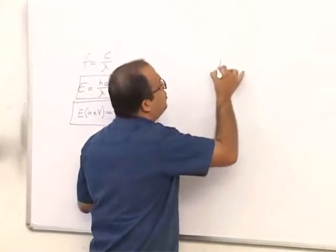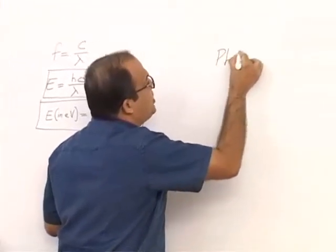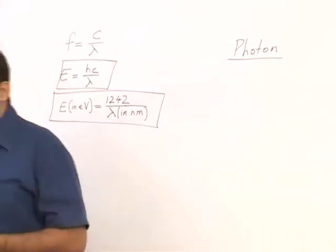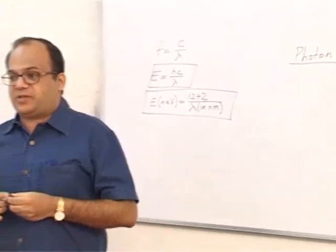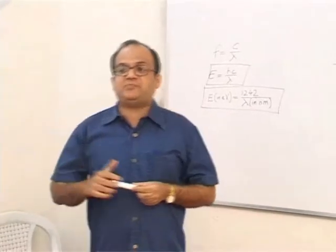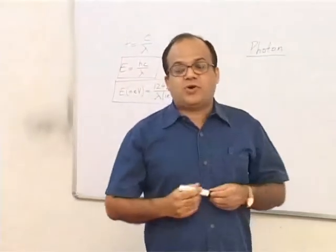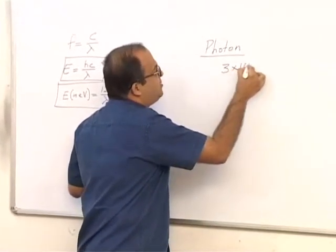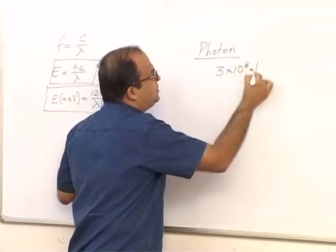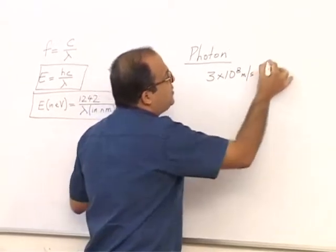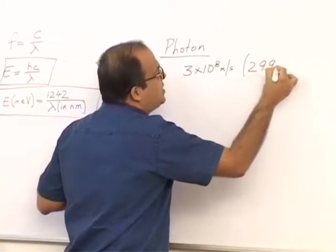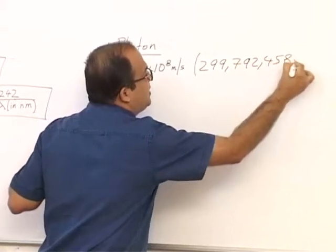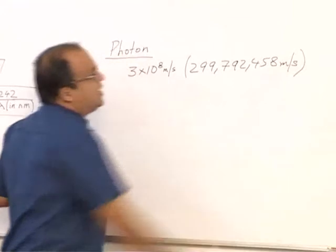A particle of light is called a photon. Photons have very special properties. The first property is that photons travel at a speed of approximately 3 × 10⁸ meters per second. The exact value is 299,792,458 meters per second in vacuum.